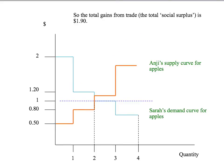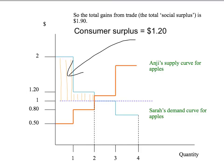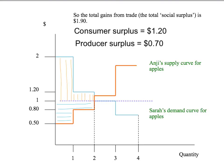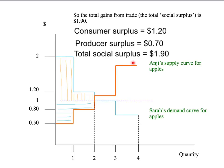So what are the total gains from trade? We have Sarah's consumer surplus of $1.20 (the orange shaded area) and Anji's producer surplus of $0.70 (the blue shaded area). There's no government revenue, expenditure, or external effects to consider, so total surplus is simply consumer plus producer surplus: $1.20 + $0.70 = $1.90. That's the total gains from trade — the orange plus blue shaded area — showing how much better off Sarah and Anji are by trading with each other.